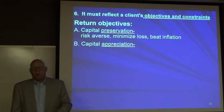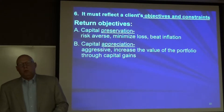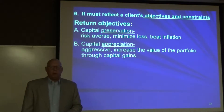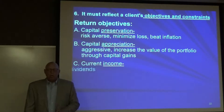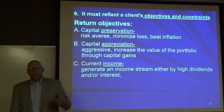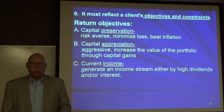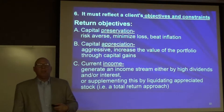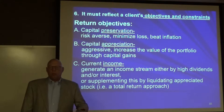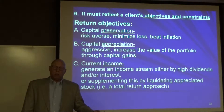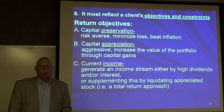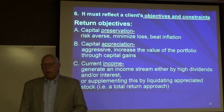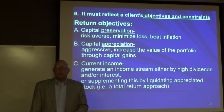Then we have capital appreciation — more aggressive. You're trying to increase the value of the portfolio through capital gains. Then we have current income — you try to generate an income stream either by high dividends and/or interest payments, or by supplementing income by liquidating stock that appreciates. We call this a total return approach, where you take dividends and interest out of the portfolio and then sell a little bit over time to generate income. So those are three big return objectives: preservation, appreciation, and income.